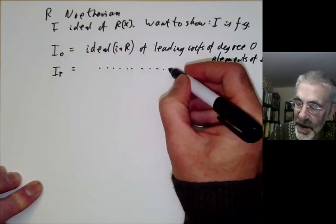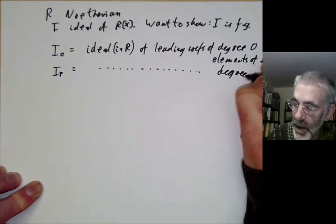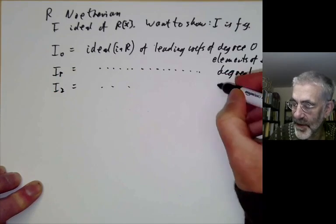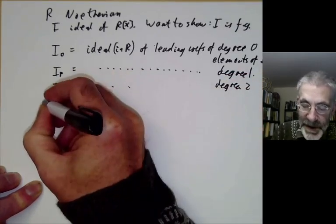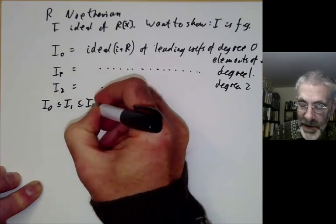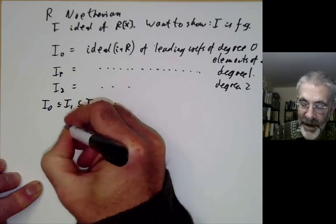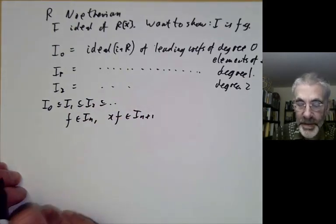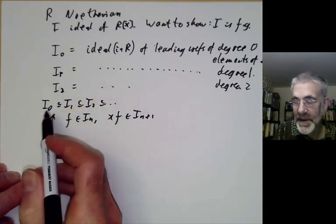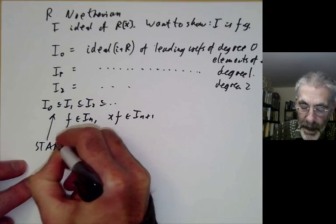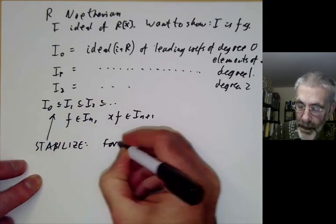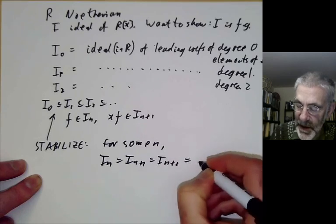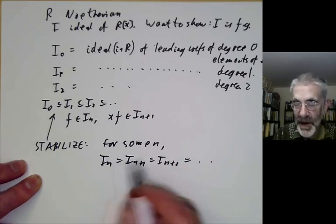Similarly, I₁ is the ideal in R of leading coefficients of degree one elements of I, and I₂ consists of degree two elements, and so on. We notice that I₀ ⊆ I₁ ⊆ I₂ ⊆ ···, because if f is in Iₙ then x·f is in I_{n+1} and has the same leading coefficient. Since R is Noetherian, this increasing chain must eventually stabilise, so for some n we have Iₙ = I_{n+1} = I_{n+2} = ···.